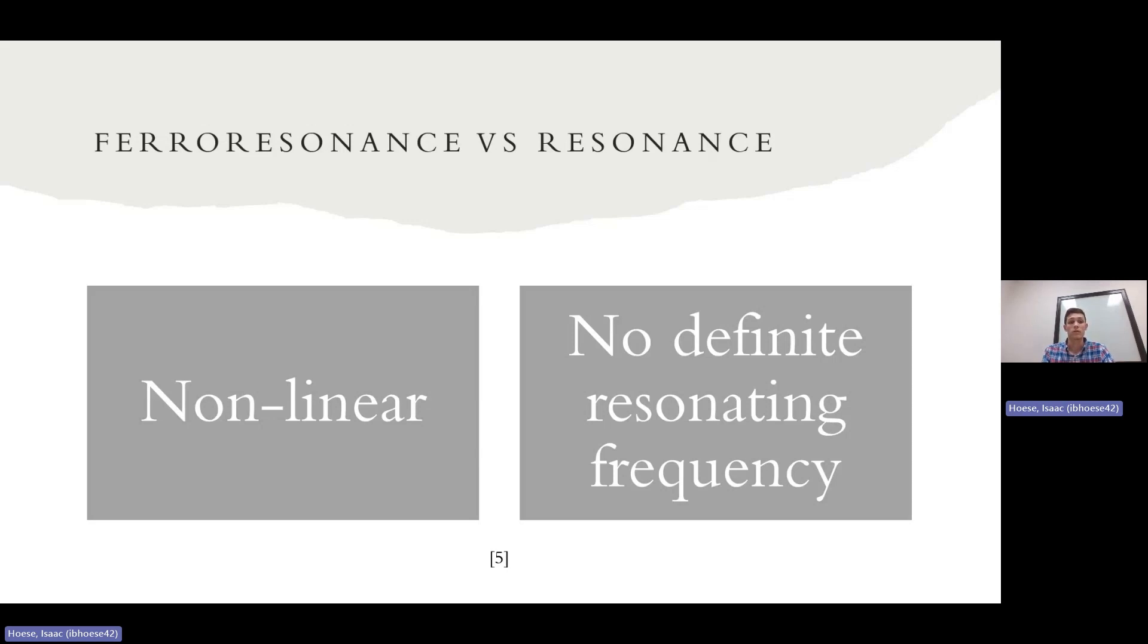The main difference is there's really two. One, it's non-linear. Ferroresonance does have a linear component, but it also has a knee and saturation component, which we'll see in a few minutes. That comes from the BH characteristic curve of the transformer itself.